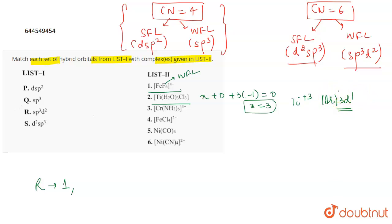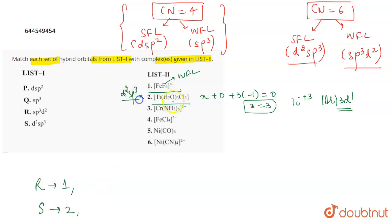There are vacant d orbitals, so it can form a d²sp³ hybridization. Since there is a vacant d orbital available, it can form d²sp³. If there were no vacant d orbital, we would go to sp³d². As there is a vacant d orbital, it shows d²sp³, so S matches with 2. Here we determine the hybridization from the electronic configuration rather than the ligand field.